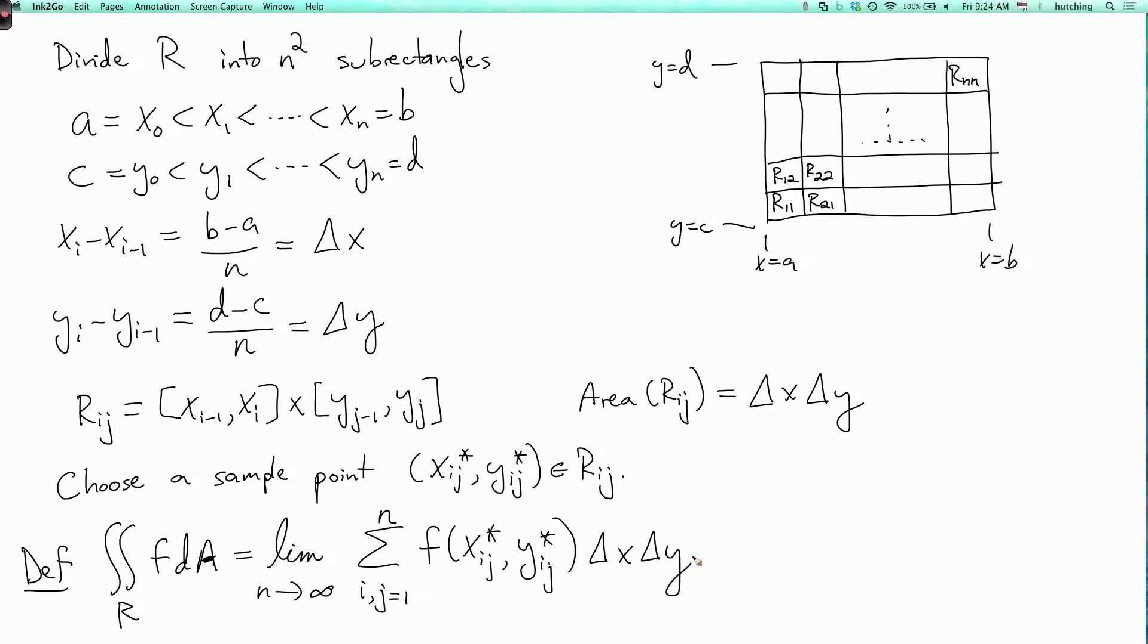So what is the meaning of this product? Well, what we're doing is we're multiplying the area of the rectangle, so you remember this is the area of the rectangle, times the value of f at some point in the rectangle. So that means that if we look at our graph here, here's the rectangle R, and here's the graph over it, and we have one of the little rectangles R_ij.